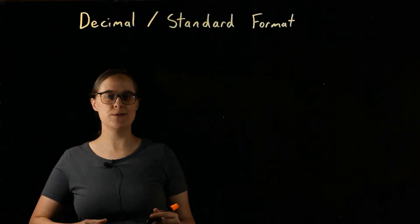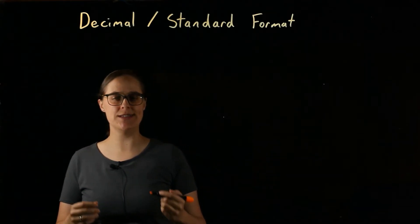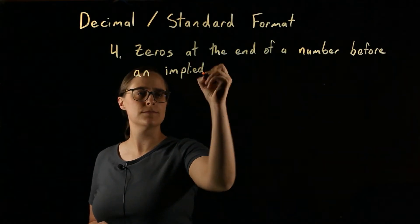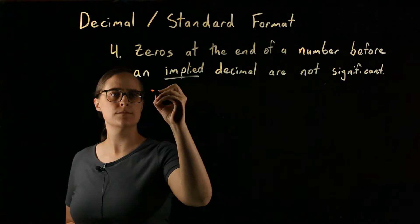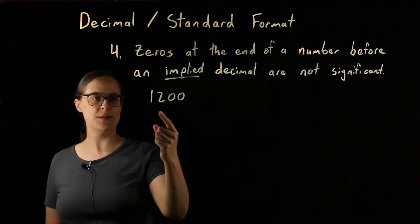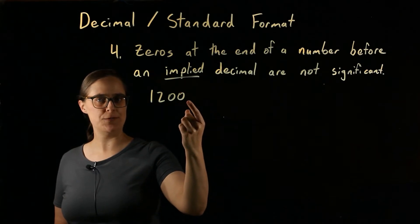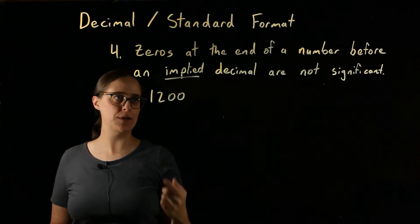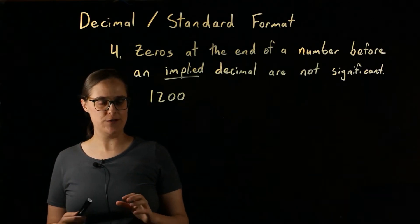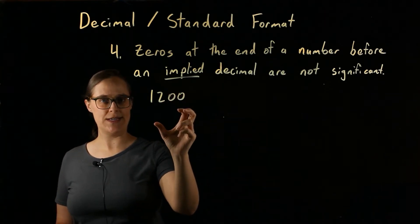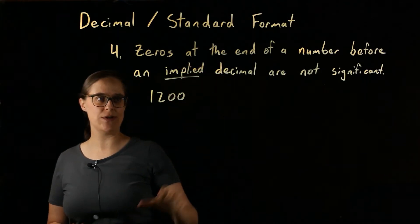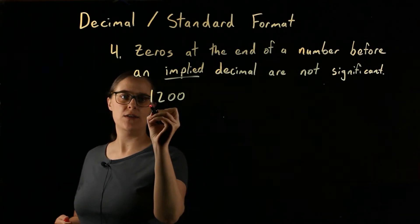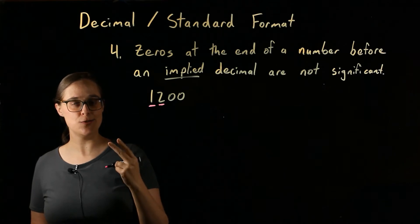Rule number 4: zeros at the end of a number before an implied decimal place are not significant. In the number 1,200, if a decimal point is not written, it is implied at the end. Zeros at the end of this number are not significant. The 1 and the 2 are significant, so this value has two significant figures.